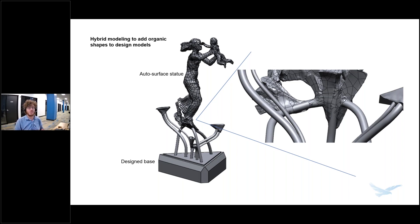Once you have a solid body, you have Boolean operations available. This is also valuable because mesh bodies and solid bodies don't really interact well — especially inside SOLIDWORKS. In 2020 they made improvements to that, but it's nice to have that solid body to work with ahead of time. So with this hybrid modeling approach, taking organic stuff and turning it into a solid makes it much easier to interact with other solid bodies.